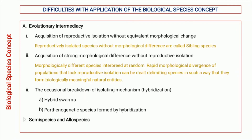Evolutionary intermediary means that the populations of a single species are reproductively isolated from each other and are in the process of evolving into new species. Two factors are considered: first, reproductive isolation has been acquired but morphological characteristics have not changed — such species are known as sibling species. The other case is where there are great morphological differences but no reproductive isolation, allowing random interbreeding, which leads to the production of hybrid swarms.